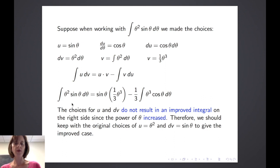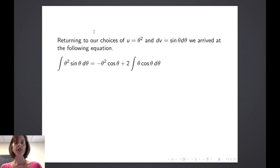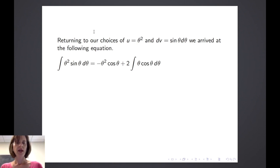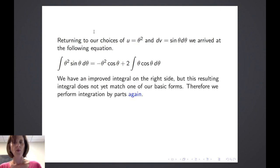Therefore, we keep our original choice of u equal theta squared and dv equal sine of theta d theta, which gave the improved case. Returning to that choice, we arrived at: the integral of theta squared sine of theta d theta equals negative theta squared cosine of theta plus two times the integral of theta times cosine of theta d theta. The integral on the right is better, but it's still not one of our basic forms, so we perform integration by parts again.